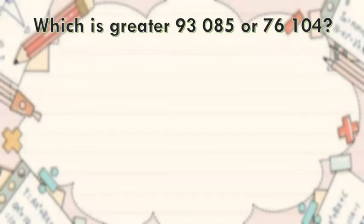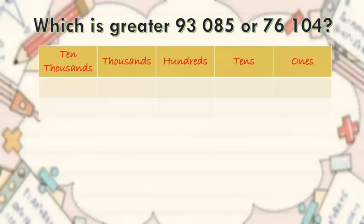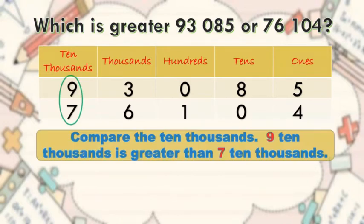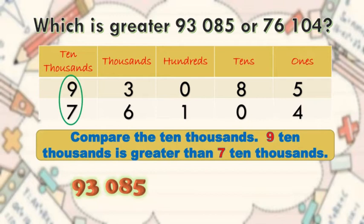Let's have this example. Which is greater, 93,085 or 76,104? In this example, it shows the place value of each digit, so it will be easier for us to compare. Compare the ten thousands: nine ten thousands is greater than seven ten thousands. Therefore, 93,085 is greater than 76,104.